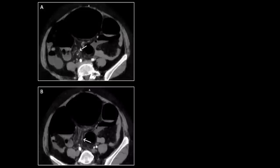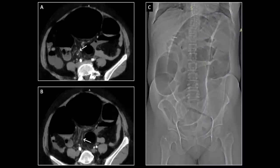Swirling or spiraling of the vessels within the sigmoid mesocolon indicates twisting of the ligament. This causes a closed loop obstruction of the sigmoid colon, also known as sigmoid volvulus. Figure C, though a CT scout, shows the classic coffee bean shaped appearance of the over distended and obstructed sigmoid, the end result of such twisting.